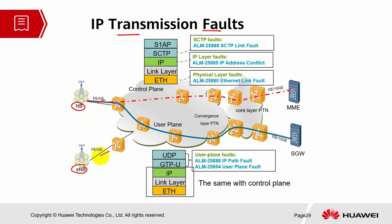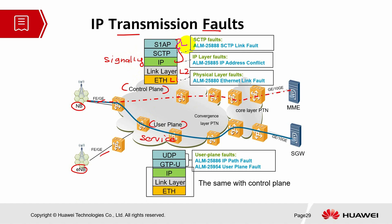The transmission link is divided into control plane and user plane. The control plane is mainly related to signaling faults and the user plane mainly handles service faults. They are divided into layers: ETH, Layer 1, Link Layer, Layer 2, IP, SCTP, and S1-AP — these are for the control plane at Layer 3.